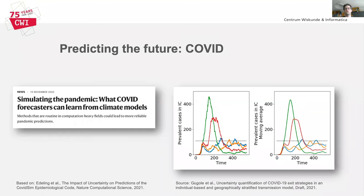Recently we also started to look at predicting the future of the coronavirus spread and the uncertainty associated with the model predictions, together with colleagues from Erasmus University. On the right you see an evaluation of four different strategies, such as lockdowns or contact tracing, and what their expected effect is on the number of people in the intensive care unit.